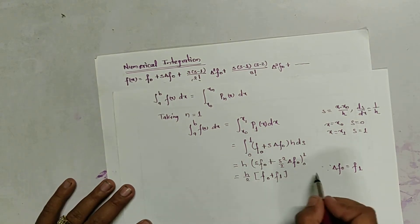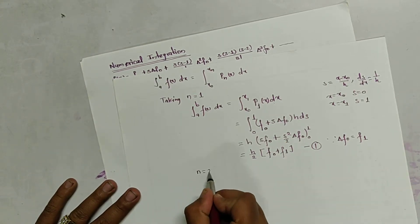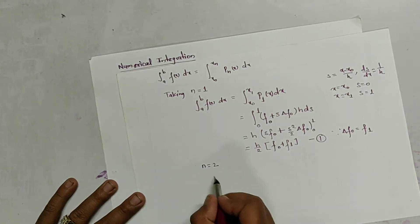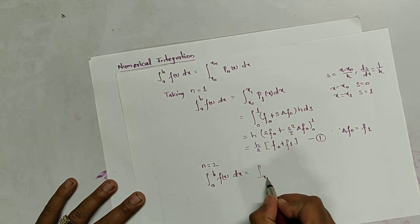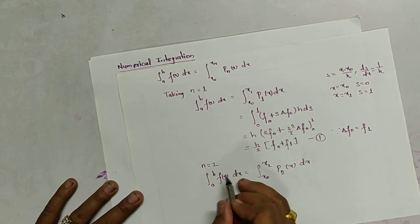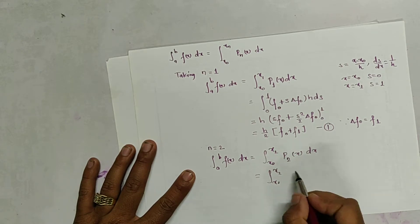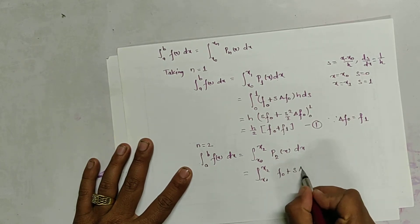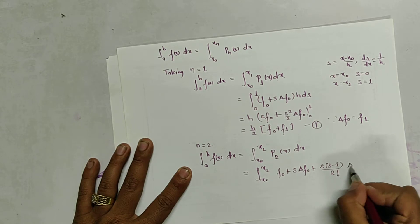Similarly, when n equals 2 we take up to three terms. The integral from a to b of f(x) dx is expressed as the integral from x0 to x2 of P2(x) dx, which becomes: f0 plus s·Δf0 plus s(s−1)/2! · Δ²f0, multiplied by h ds.